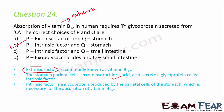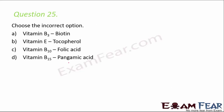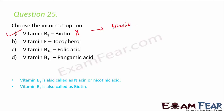Question number 25: choose the correct option — vitamin B3 is biotin? This is not correct because vitamin B3 is niacin, also called nicotinic acid. So option A is incorrect. All others are correct: B10 is folic acid, B12 is pangamic acid, vitamin E is tocopherol. Biotin is actually B7.